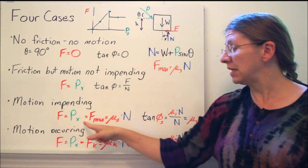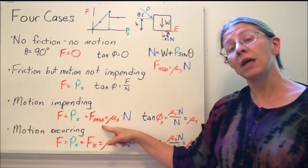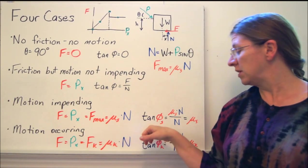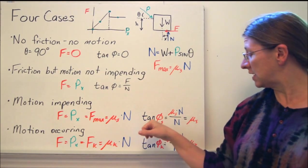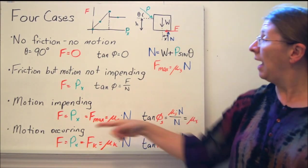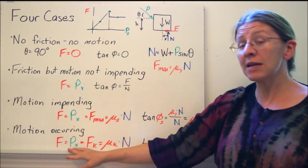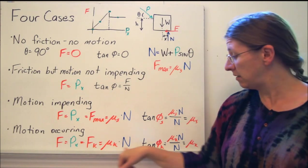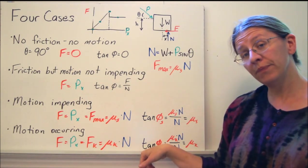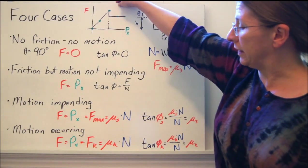When I get to motion impending, F is equal to Px still because of the sum of the forces in x, but now it's equal to F max from mu times N. This is my angle of static friction, phi s, where I have tan phi s equals mu s. Or I could live out here on this part of the graph where I have F is equal to Px, but now this is F sub k, or mu k times N, or tan phi k. All the s's become k's. That's how that works. So those are my four possibilities.